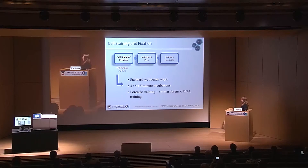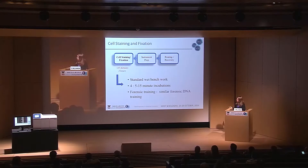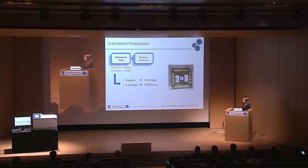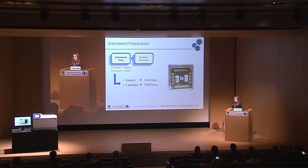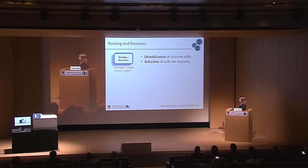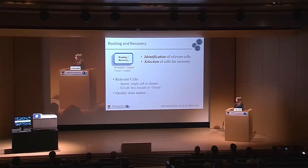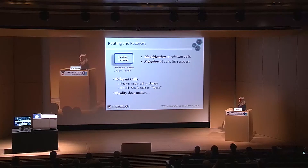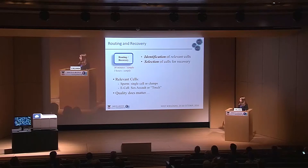The forensic application for DEPArray training is very similar to forensic DNA training. Loading the sample into the machine is as simple as loading the sample into the cartridge and then the cartridge into the DEPArray. During the routing and recovery phase, we can identify and select relevant cells for recovery, including single cells or sperm clumps. We also recover epithelial cells from sexual assault cases and touch DNA. The quality of the cell does matter, and I'll come back to that later.